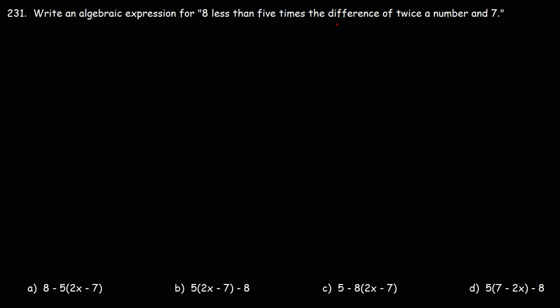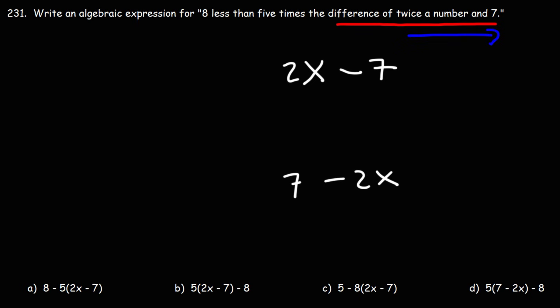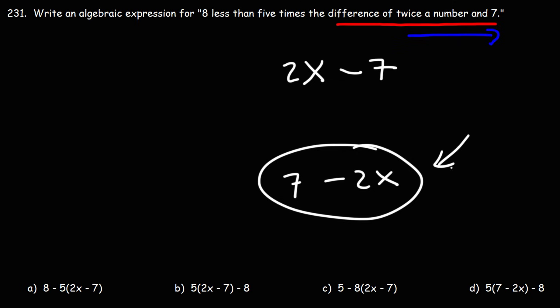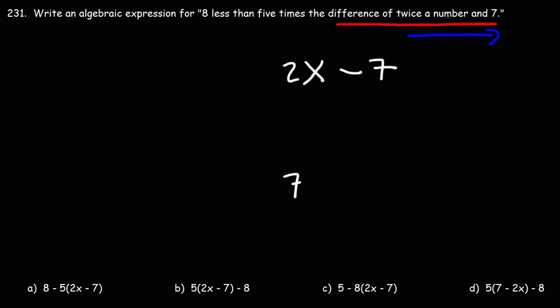So the difference of twice a number and 7. First, what is twice a number? We know the number is x, so twice a number is 2x. Now we want to find the difference of twice a number and 7, so that's 2x minus 7. We want to read that from left to right, so we don't want to say 7 minus 2x. In order for it to be 7 minus 2x, it should have said the difference of 7 and twice a number. But twice a number was written first, so we write that first.